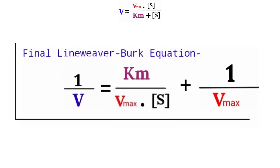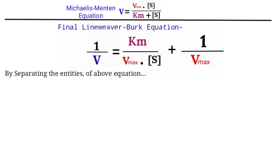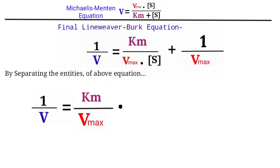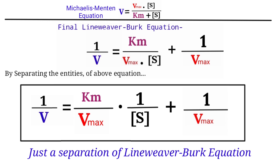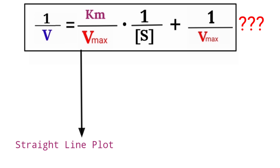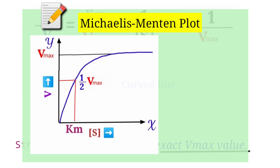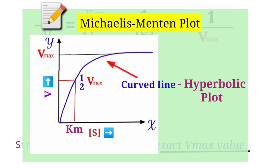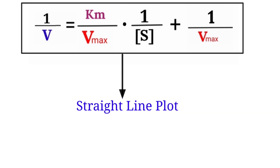This equation is known as the Lineweaver-Burk equation, a transformation of the Michaelis-Menten equation. Separating the entities gives: 1/v = (Km/Vmax) × (1/[S]) + 1/Vmax. We focus on this equation because it generates a straight-line plot, which is essential for finding the exact Vmax value — the problem with the Michaelis-Menten hyperbolic plot. The Lineweaver-Burk equation solves that problem.